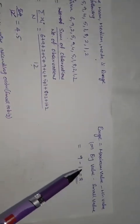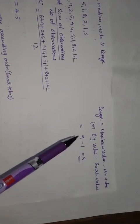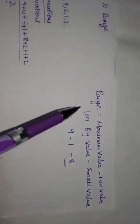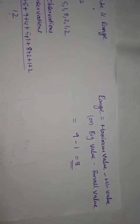Next, range. What is the range? Range equals maximum value minus minimum value. The maximum value in the series is 9 and the minimum value is 1. So range equals 9 minus 1, which equals 8.